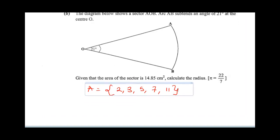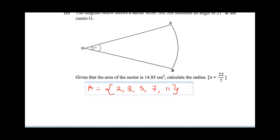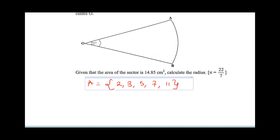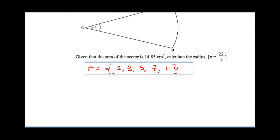B part of the question says, the diagram below shows a sector AOB, arc AB subtends an angle 21 degrees at the center. Given that the area of the sector is 14.85, calculate the radius. The formula for the area of the sector is given as theta over 360 multiplied by pi r squared.